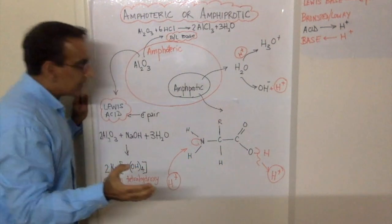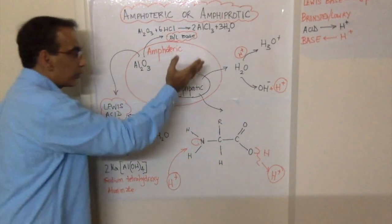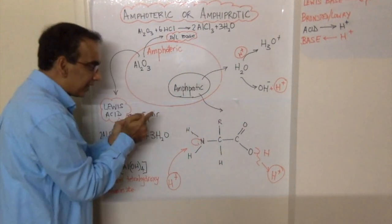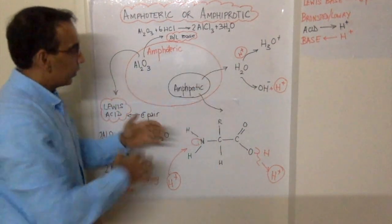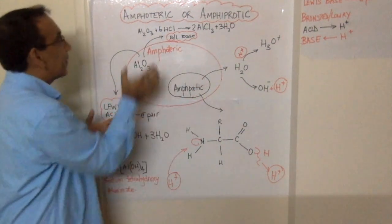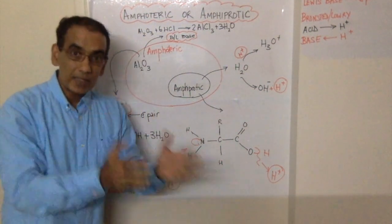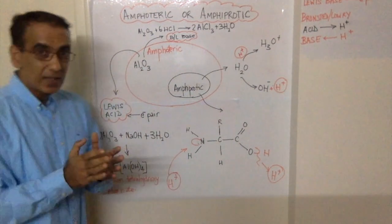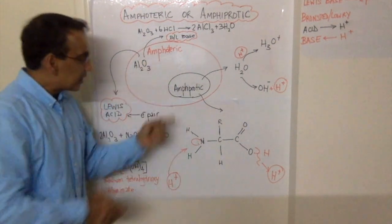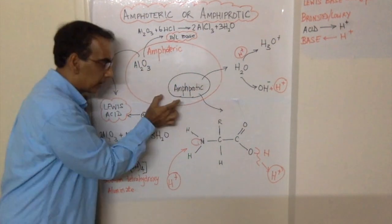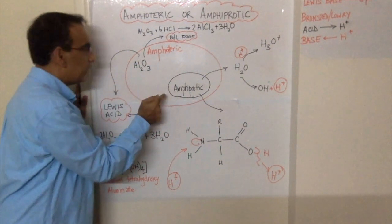And in so doing, they behave as acids or bases by donating or accepting protons. They are specifically amphiprotic because they can either donate or accept. But more generally, they are amphoteric because they behave as acids or bases. A substance that is amphoteric is not necessarily amphiprotic, but once a substance is amphiprotic, it is bound to be amphoteric.